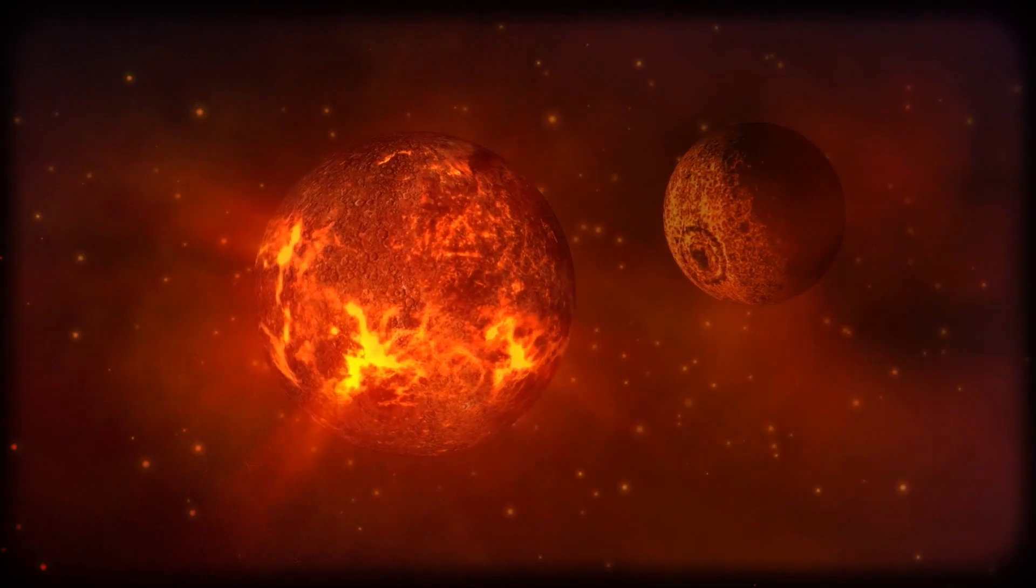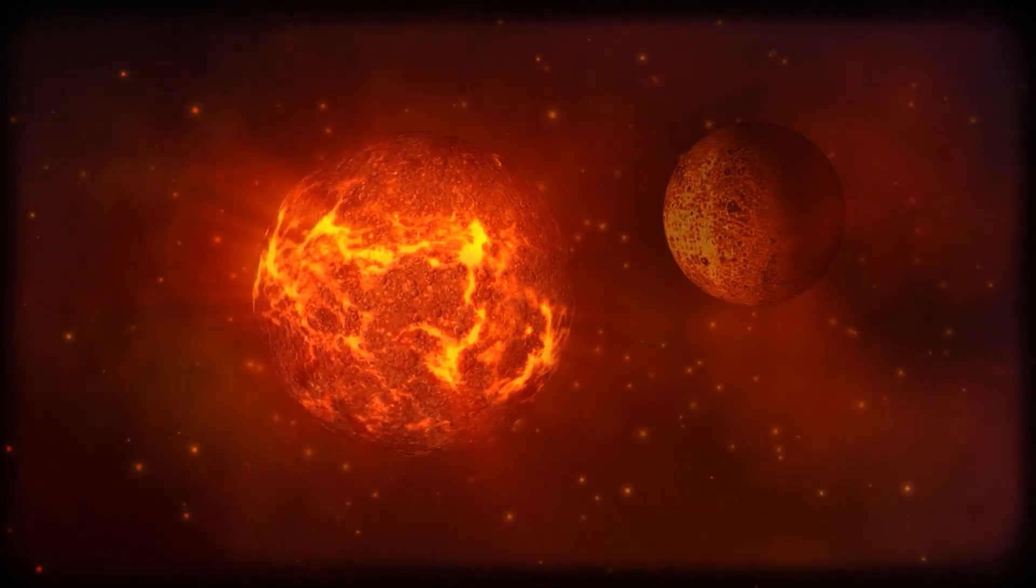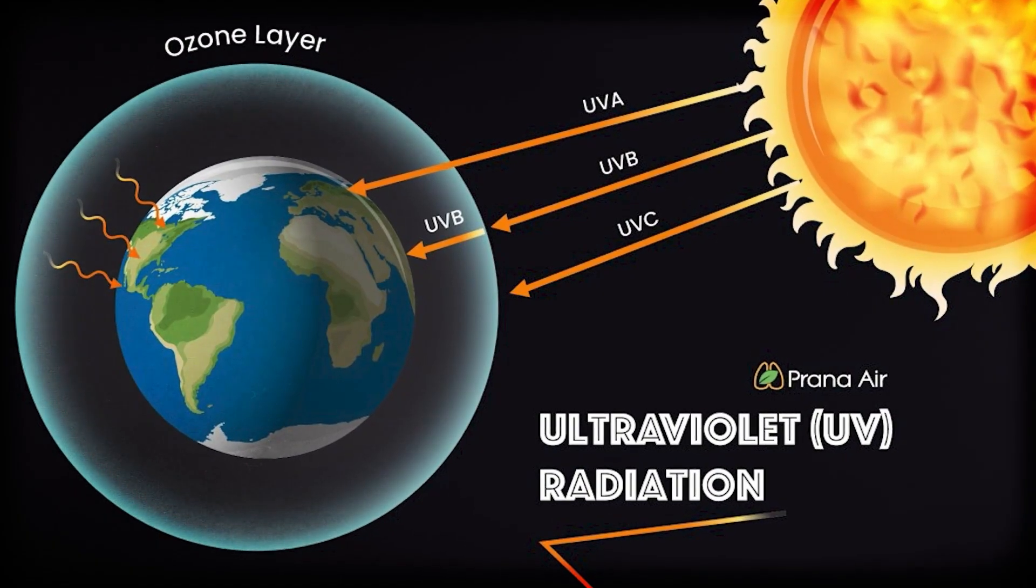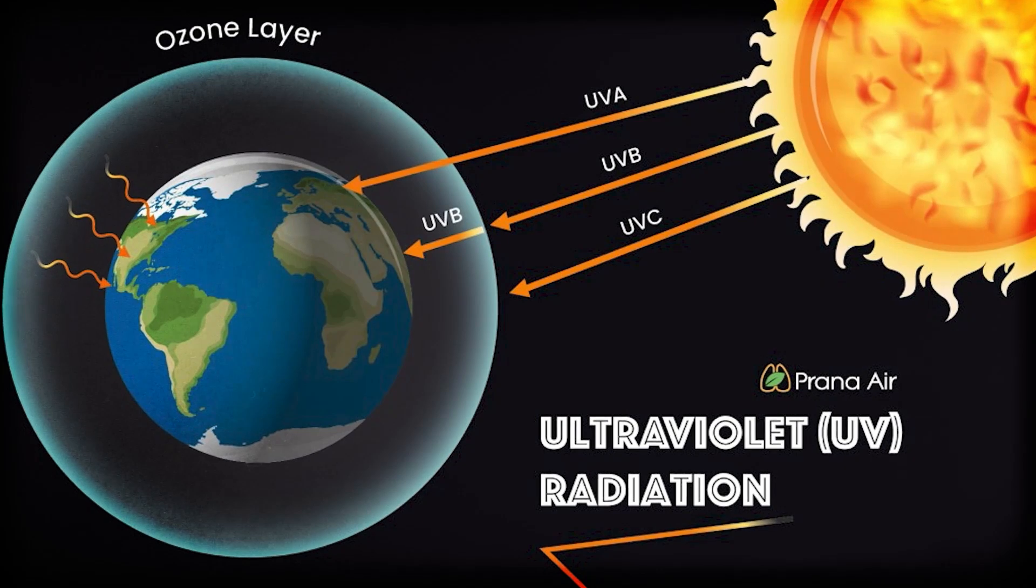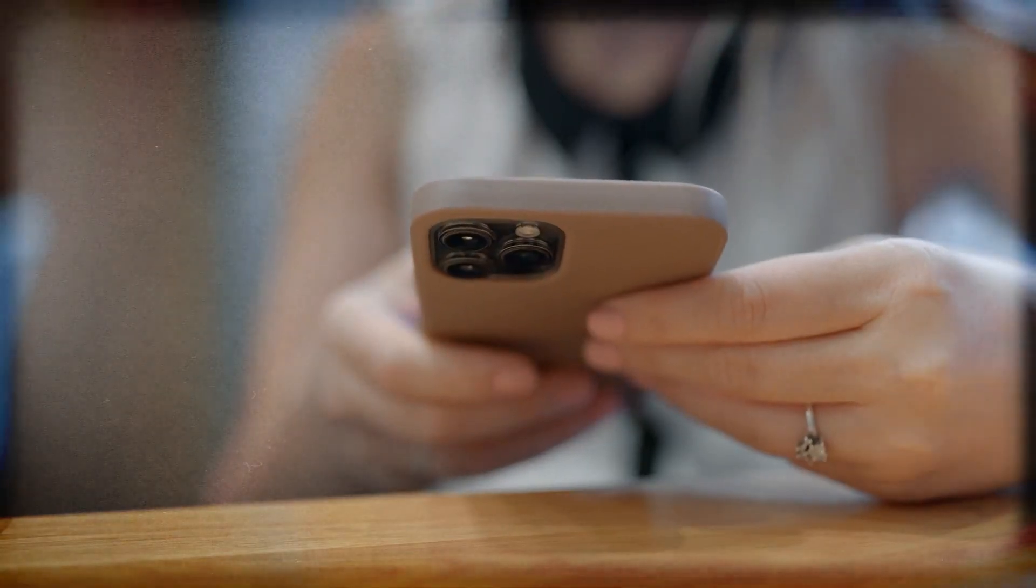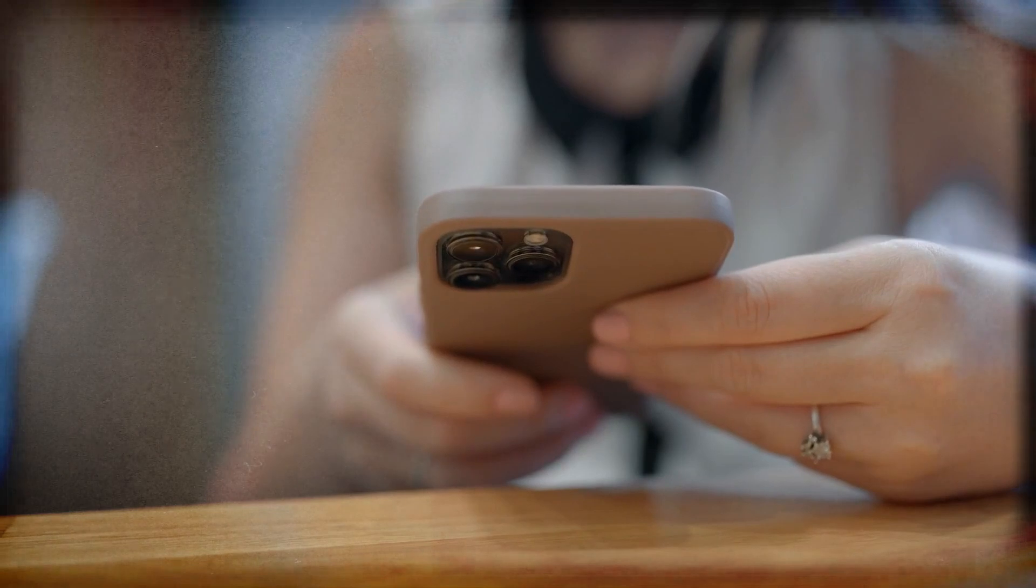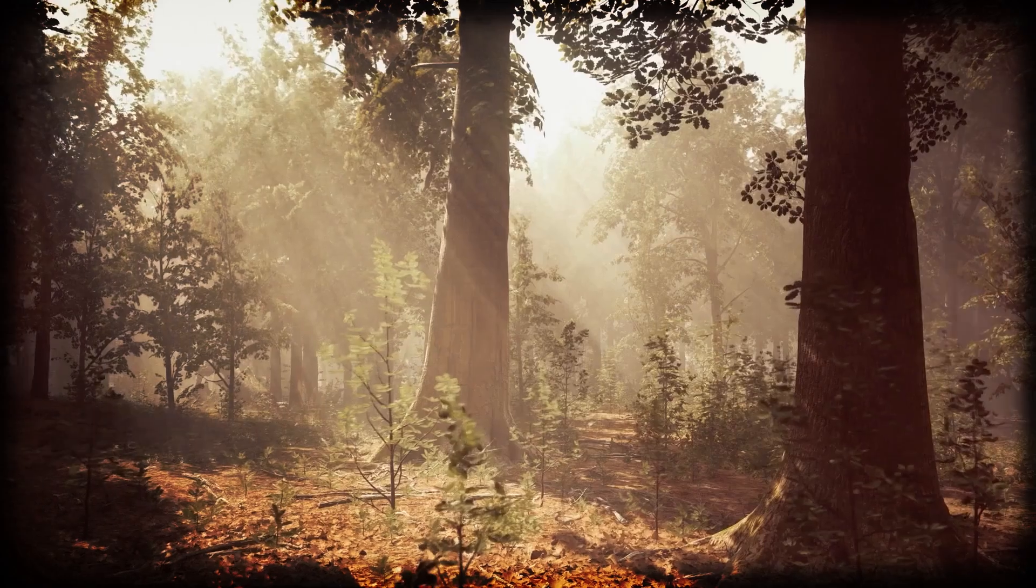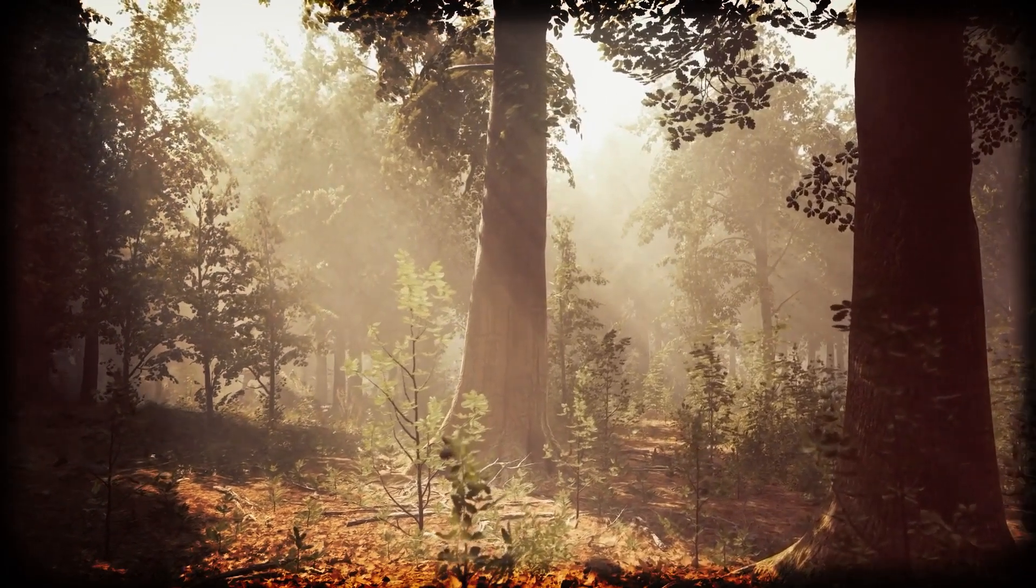And even though red dwarf stars are cooler than our Sun, they're far more active, frequently releasing bursts of intense ultraviolet radiation. That kind of exposure could seriously damage any developing lifeforms or strip away atmospheres altogether.